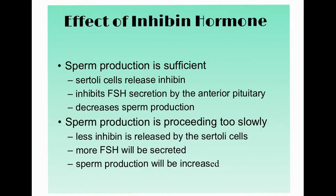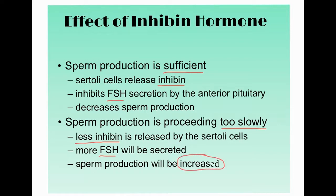If sperm production is sufficient, Sertoli cells release inhibin, which slows or stops secretion of FSH by the anterior pituitary, decreasing sperm production. Conversely, if sperm production is too slow, less inhibin is secreted, causing more FSH to be released, which increases the rate of spermatogenesis.